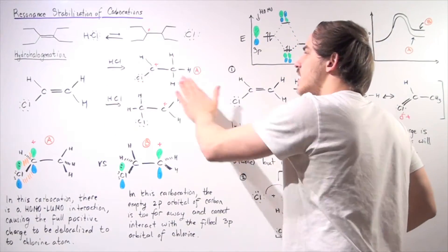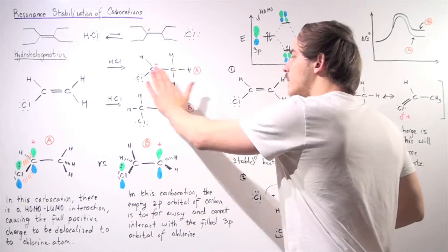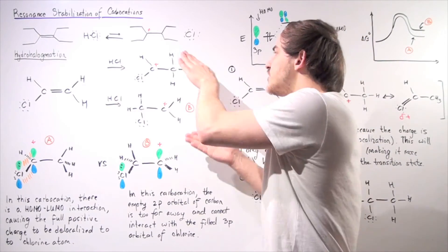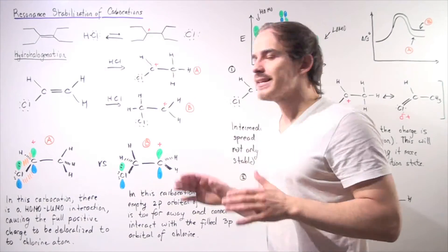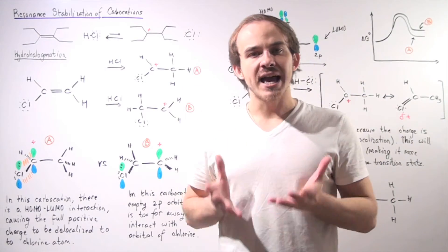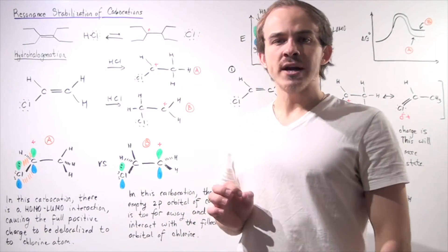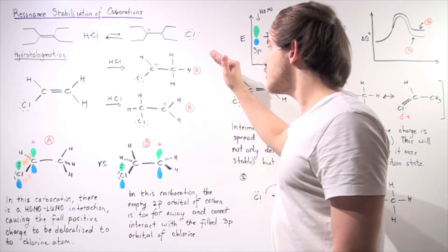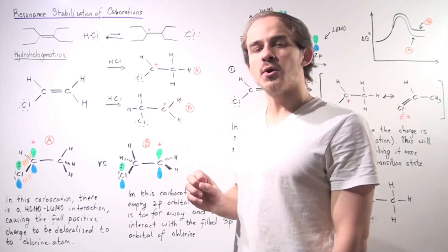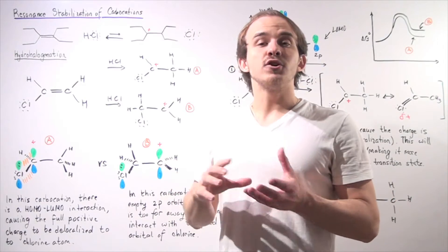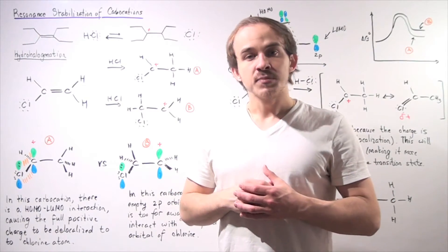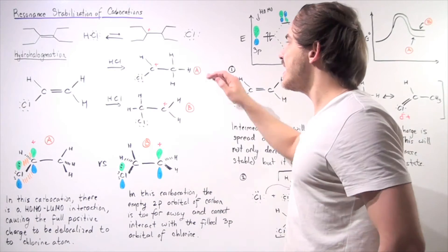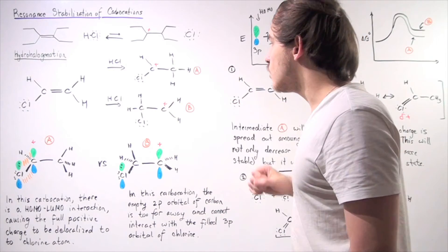Let's call these intermediate A and intermediate B. Which one of these is the more stable carbocation? To answer that question, let's examine the molecular orbital picture for each carbocation and look for stabilizing interactions — does any stabilizing interaction exist in A and/or in B?